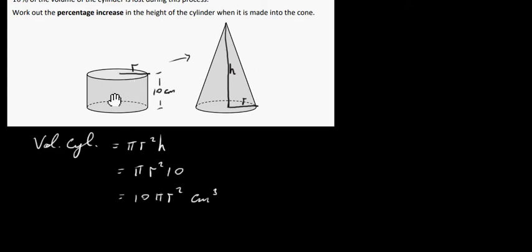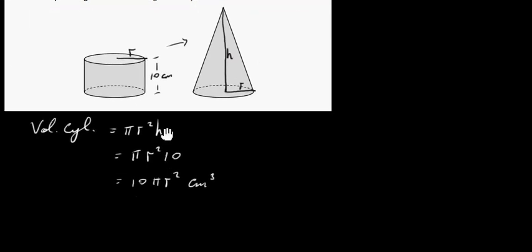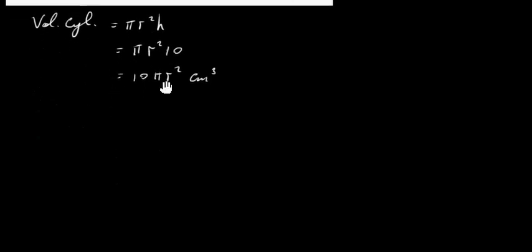Now when we melt this cylinder down to make the cone we're going to lose 10% of this volume here. So in other words the volume of our cone is going to be 90%. 90% of 10 pi R squared centimeters cubed. So 90% of 10 is just 9. So it's going to be 9 pi R squared centimeters cubed.